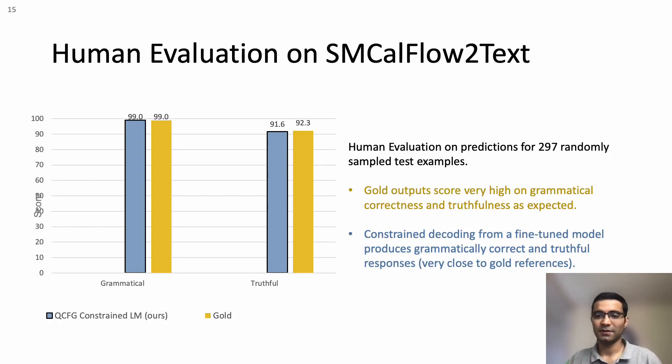We conducted human evaluation where annotators rated outputs on various dimensions such as grammatical correctness and truthfulness. As was expected, gold outputs score very high on both these dimensions. Note that outputs from our proposed approach get scores pretty close to those of gold outputs.